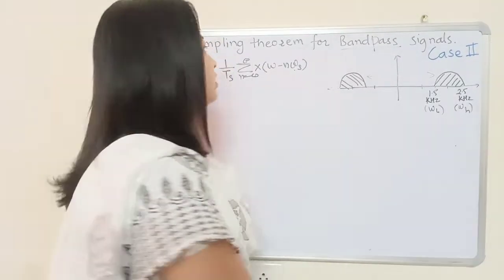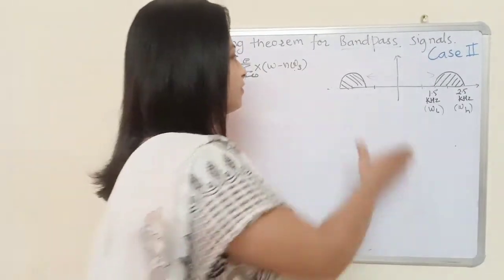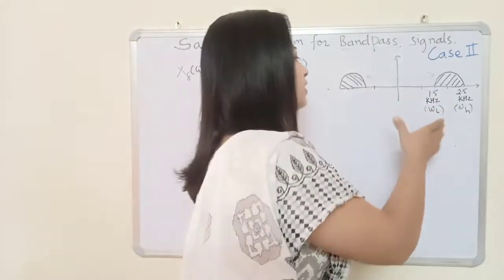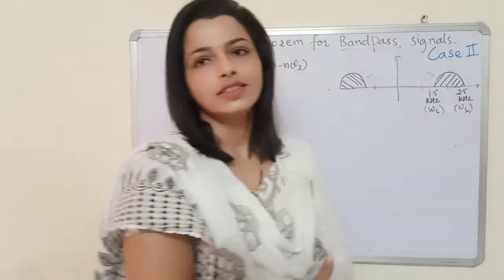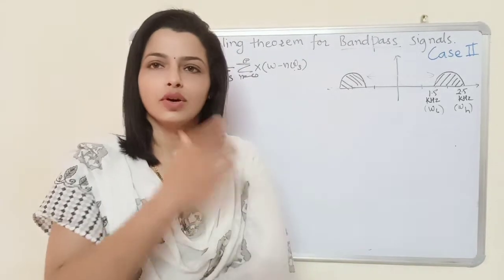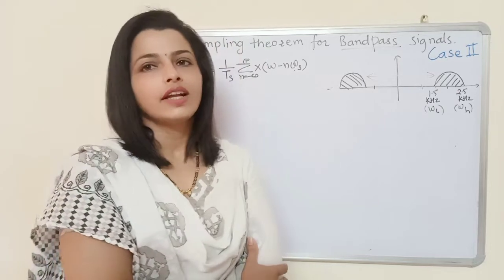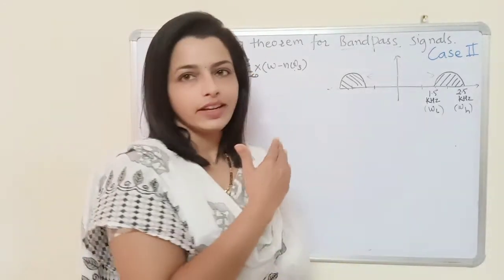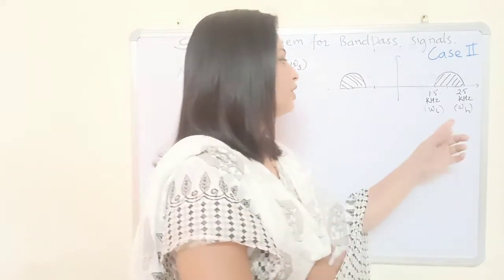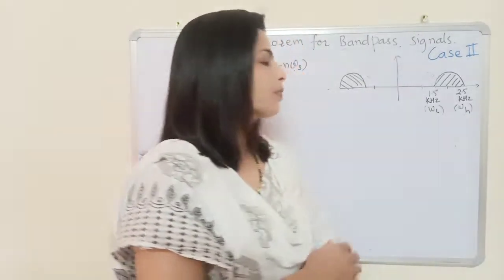Hello friends. Last time we covered the sampling theorem for band pass signals. At that time I had taken a signal with a different band of frequencies. In Case 1, we were checking two conditions: first, finding the center frequency for the band pass signal and checking that it is greater than the bandwidth divided by two. The second condition was checking the relationship between the higher frequency and the bandwidth.